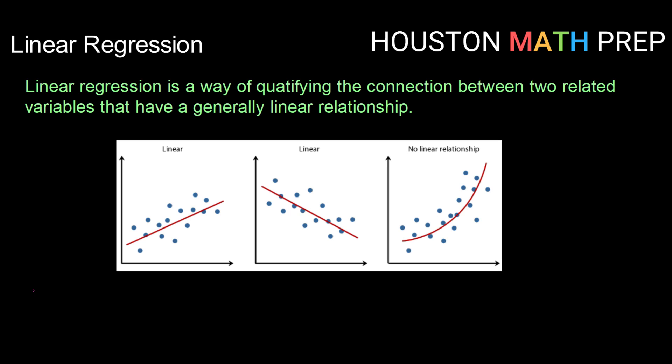Linear regression is a way of quantifying the relationship between two related variables that have a generally linear relationship. So when we talk about linear regression, we're talking about taking two variables that we think might be related and looking at is there a way that we can approximate their relationship, we can quantify their relationship.